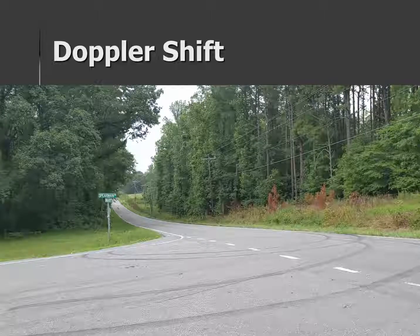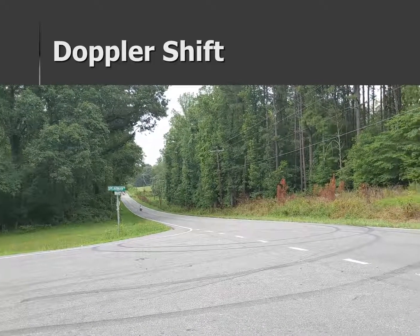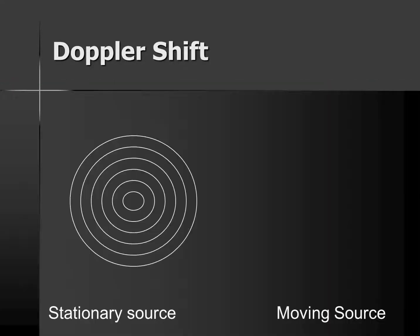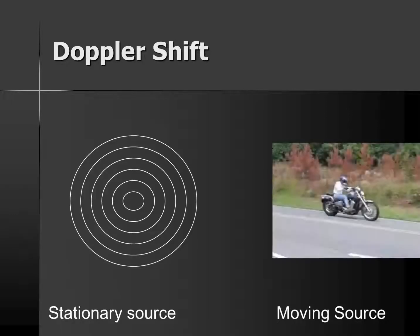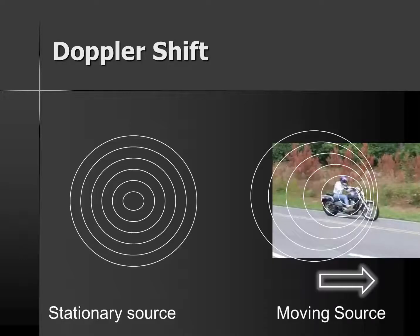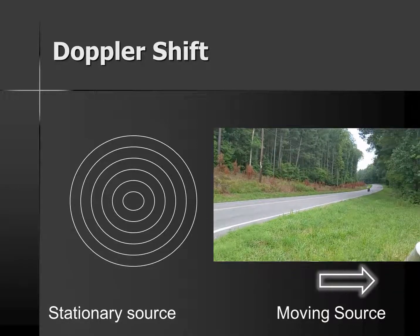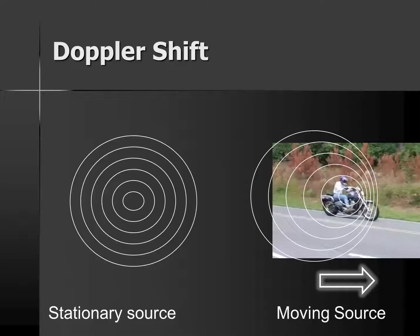Just like ripples in water, sound also travels in waves — and remember the motorcycle? A stationary source gives off sound waves in all directions, but with a moving source, the sound waves bunch up on the leading side and stretch out on the trailing side. What happened to the pitch of my motorcycle horn as I was approaching the camera? The pitch grew higher. As soon as the motorcycle passed, the waves stretched out and the pitch dropped or got lower because the waves are further apart.